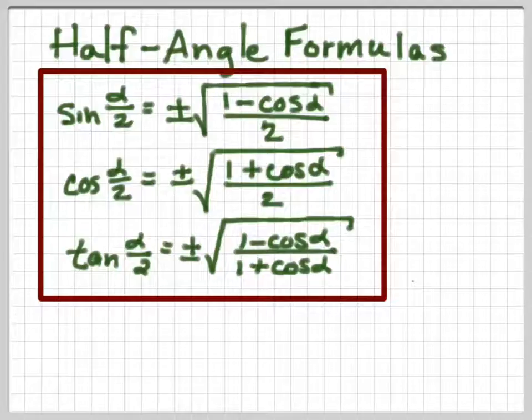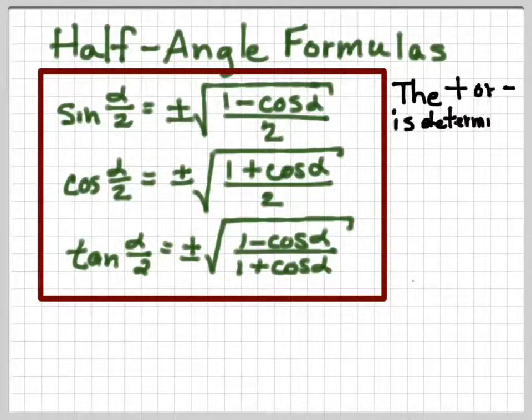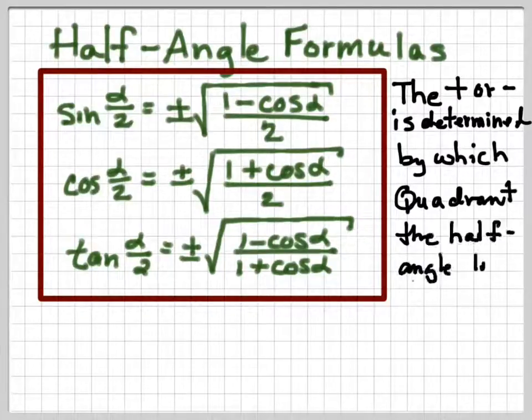Now let's talk about that plus or minus outside the square root. It's not the same thing as the square root having two roots, positive and negative. To determine whether the value will be positive or negative, you need to determine which quadrant the half angle lies in.